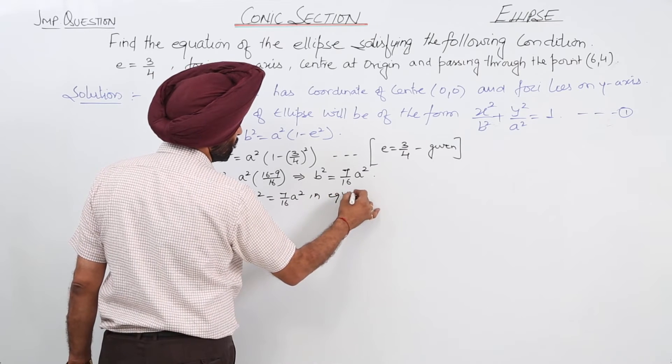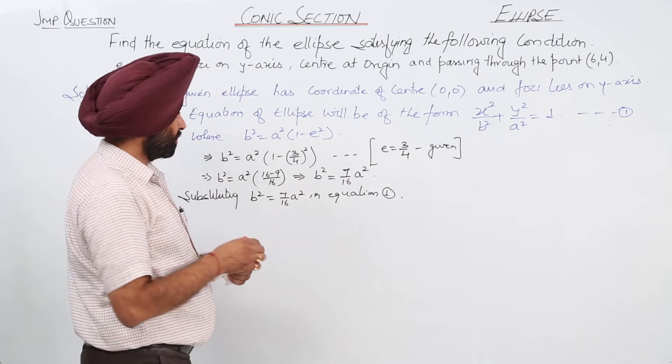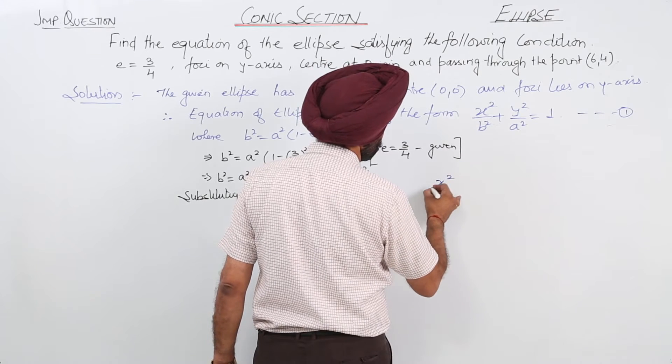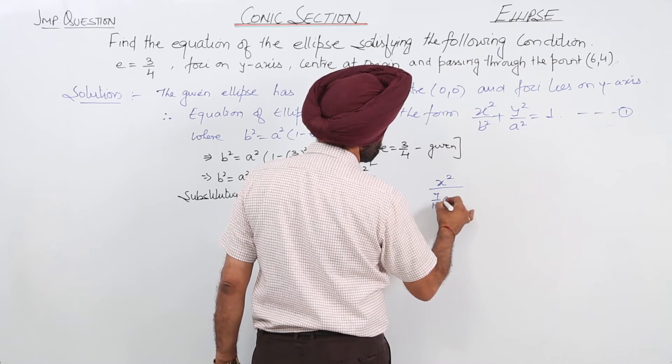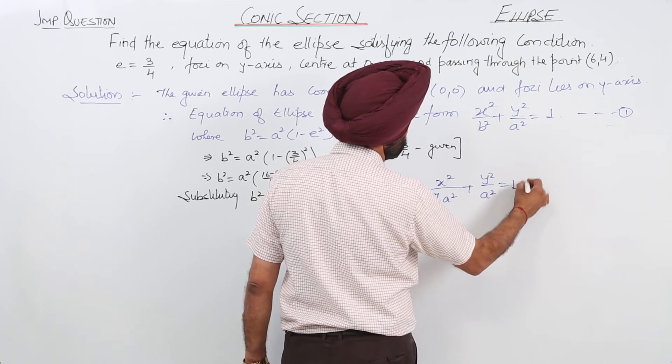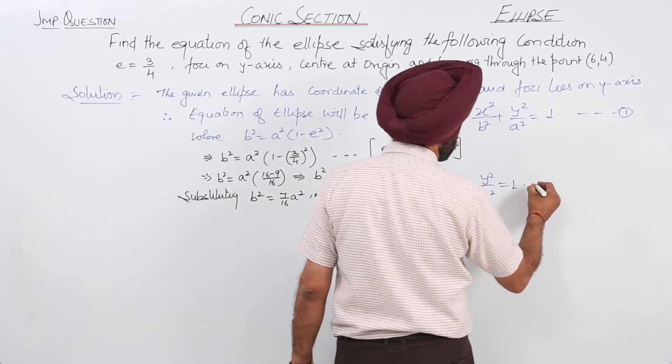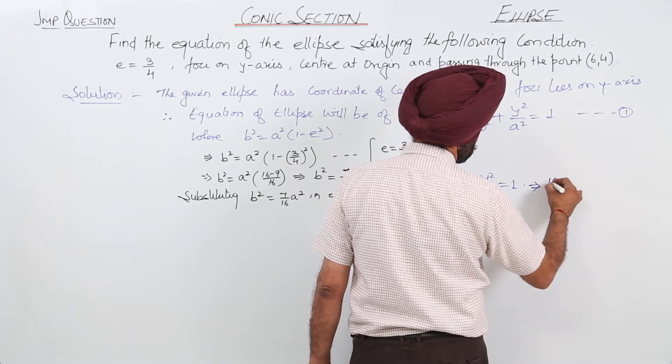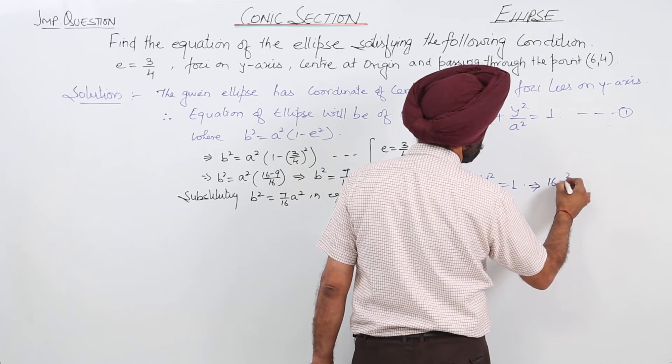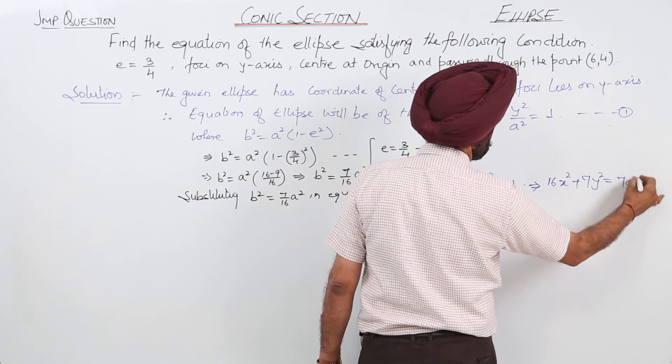Now, what we are getting when we substitute this part? So equation 1 is: x² upon (7/16 a²) plus y² upon a² is equal to 1. This becomes 16x² plus 7y² is equal to 7a².